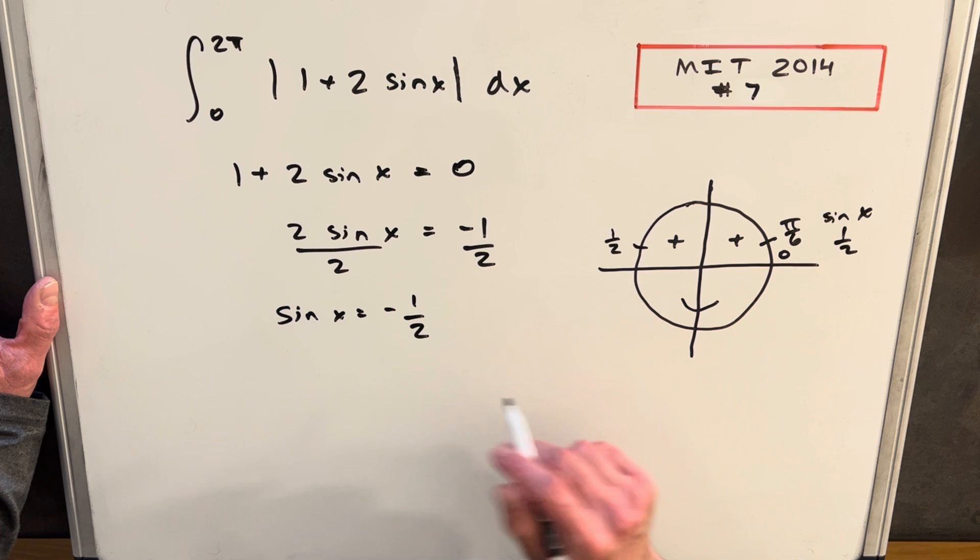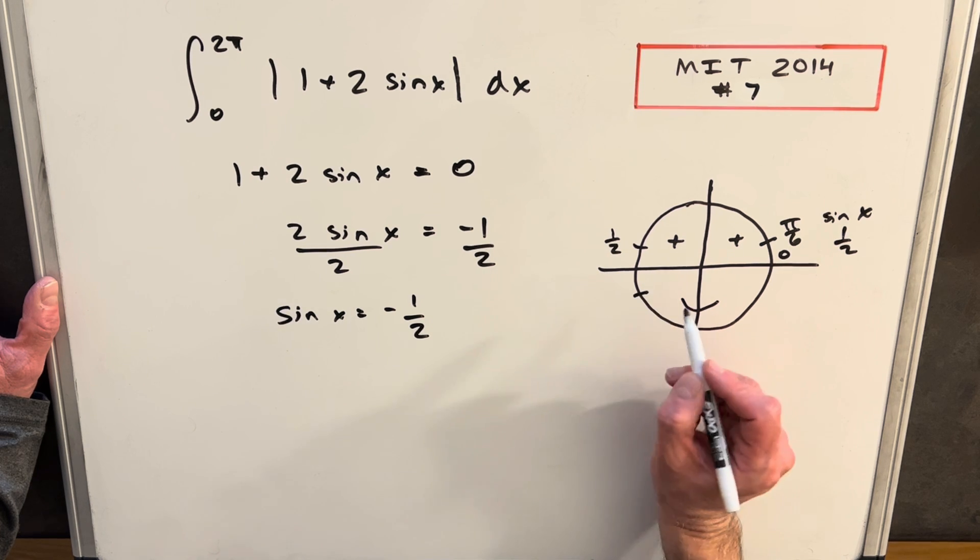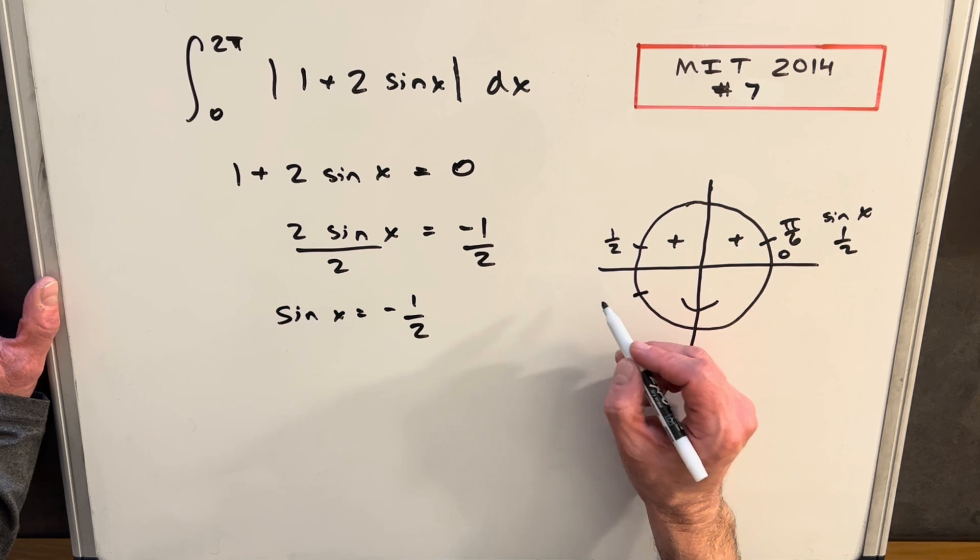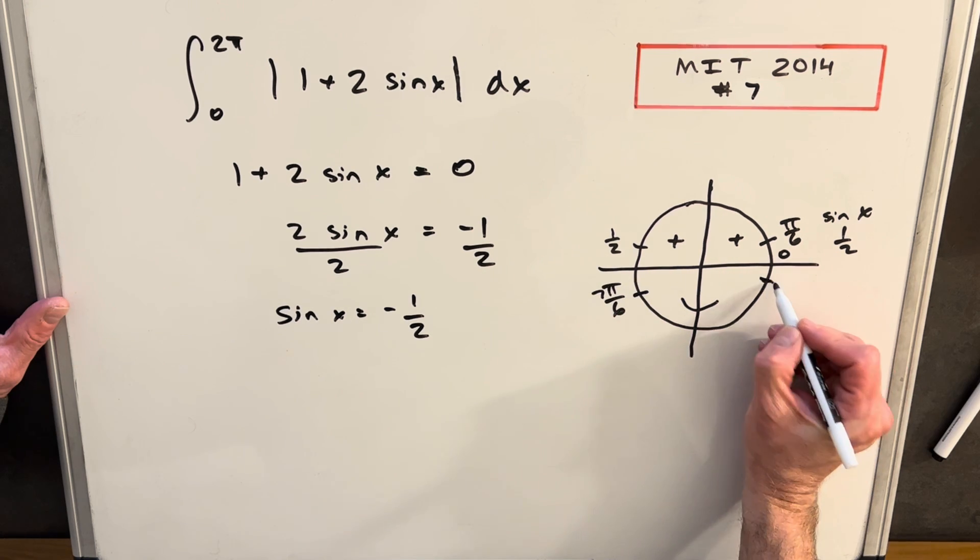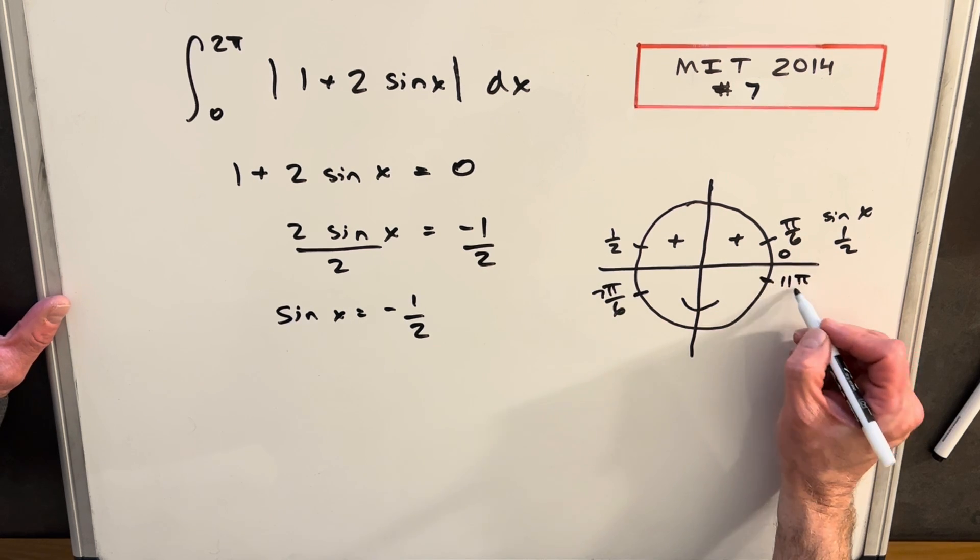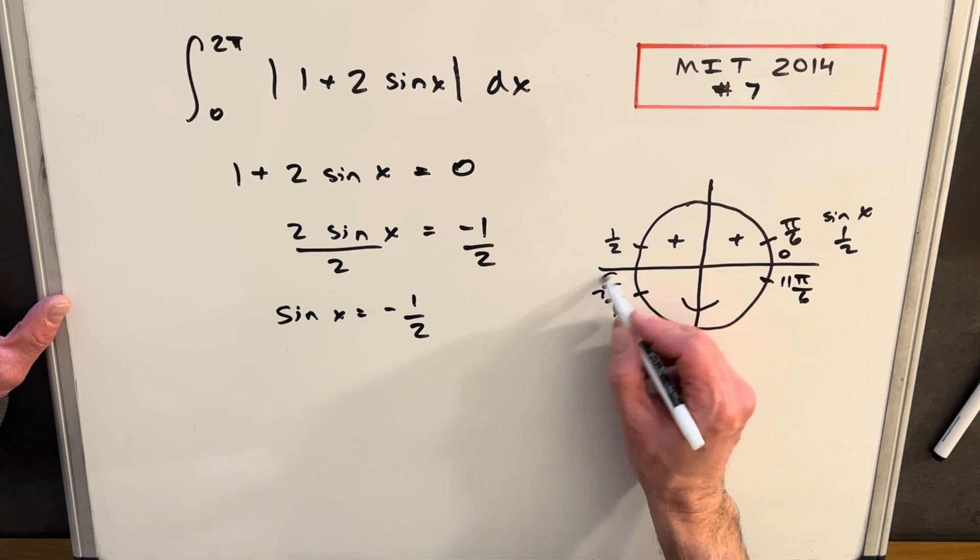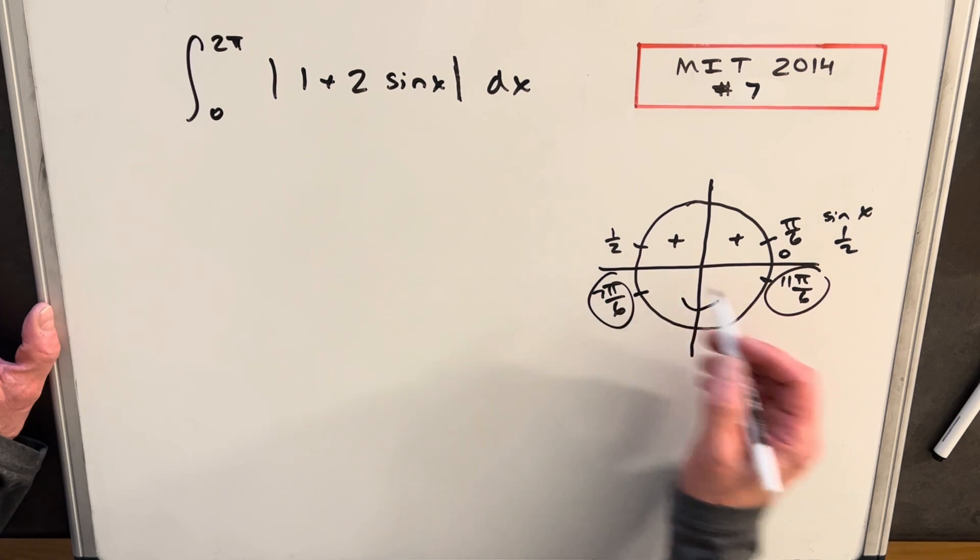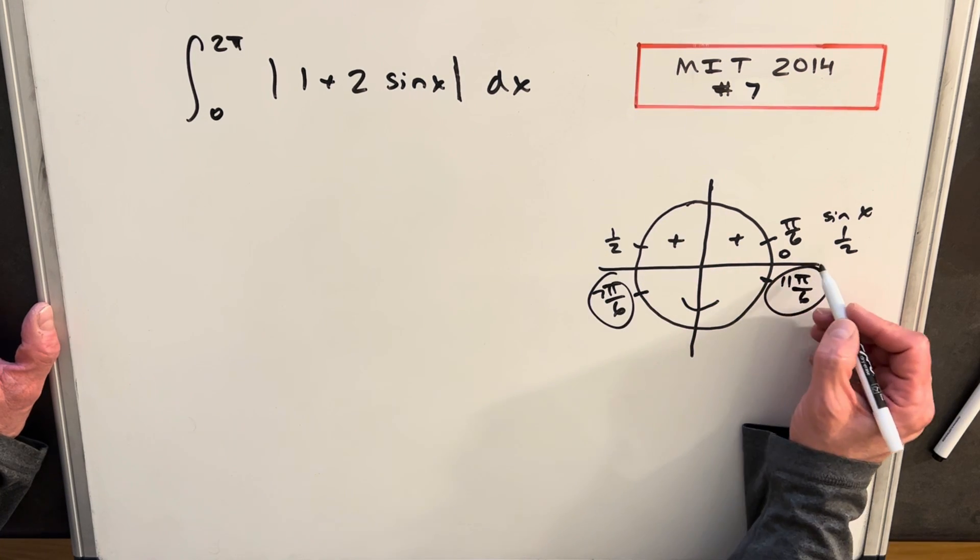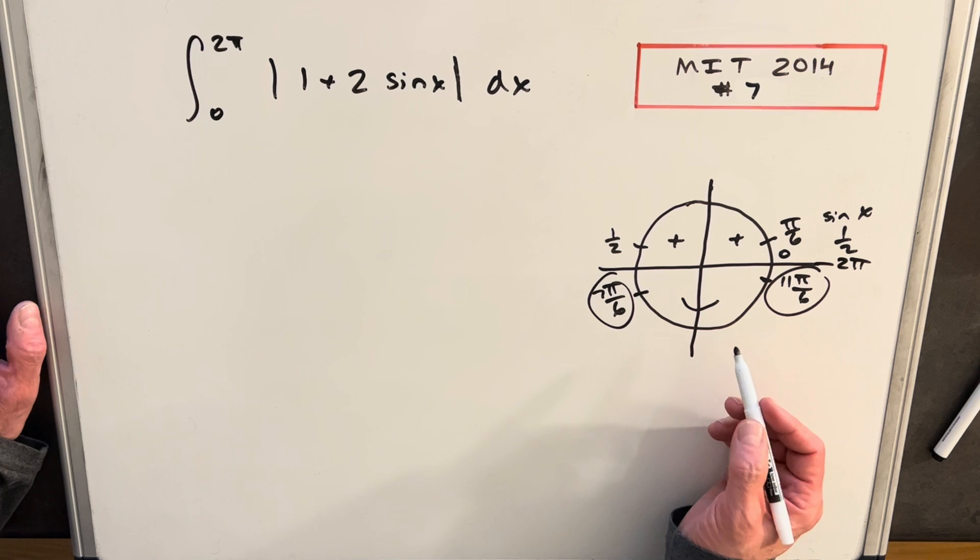so that's going to happen over here. And this is going to be at 7π over 6. And this other value over here is going to be 11π over 6. So at these two points, this is where sine of x is going to be minus 1 half. So then from 0 to 2π is going to be this whole circle, right, this 0 point is also 2π.